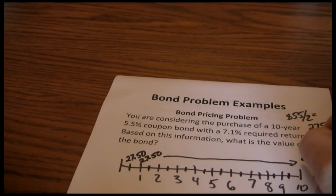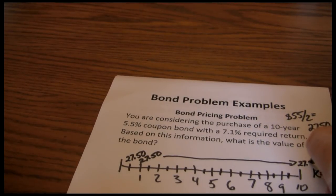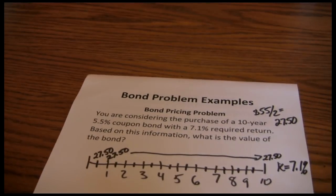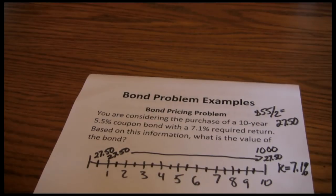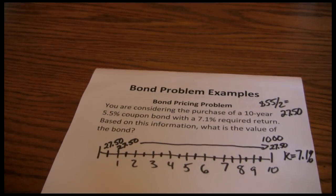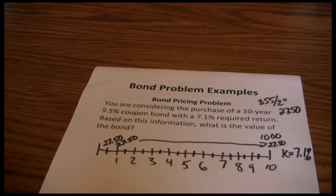Then at the end of year 10, we're going to get our last $27.50, and we're going to get $1,000. That's the par value, our maturity value, which gets returned to us at the end of the bond's life.